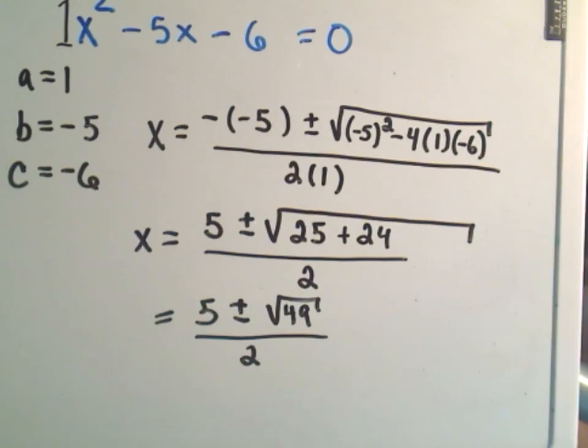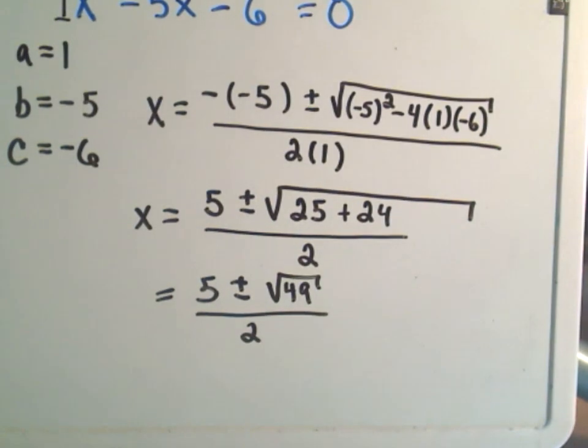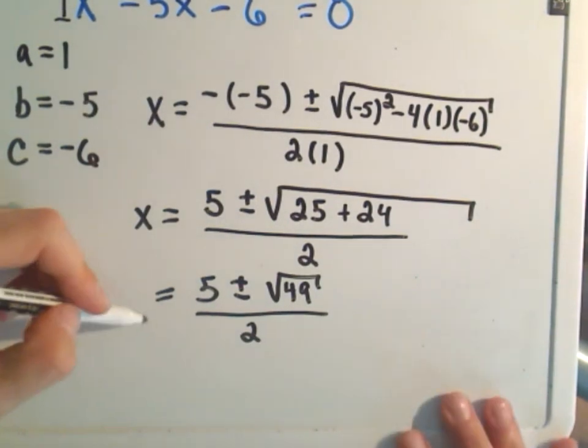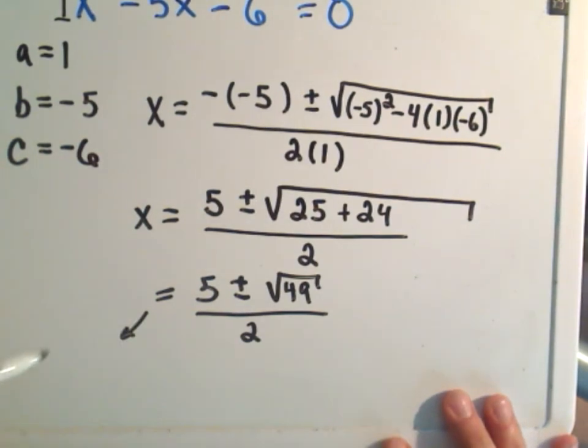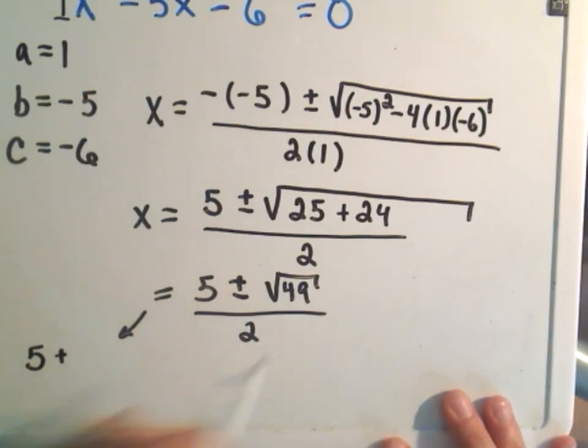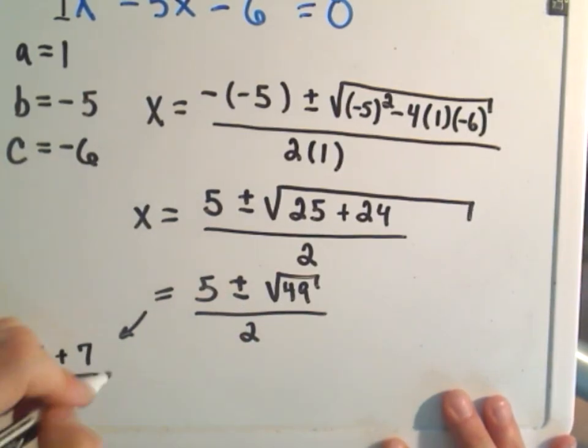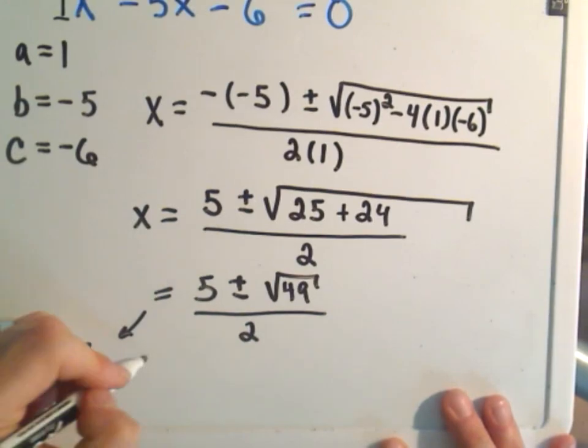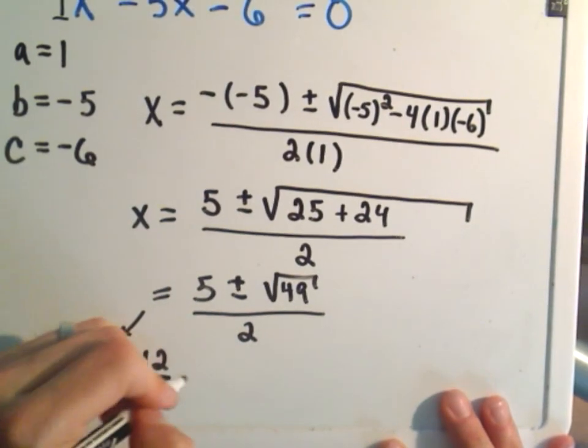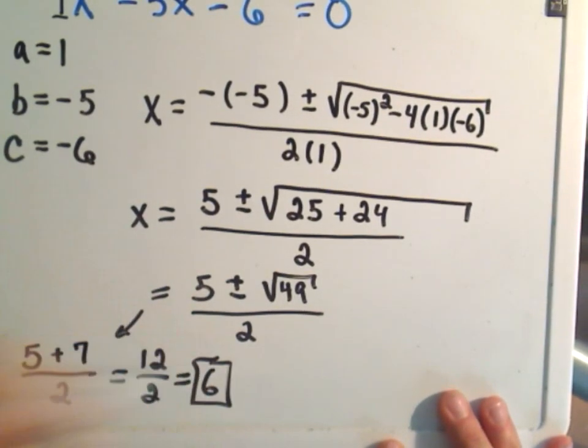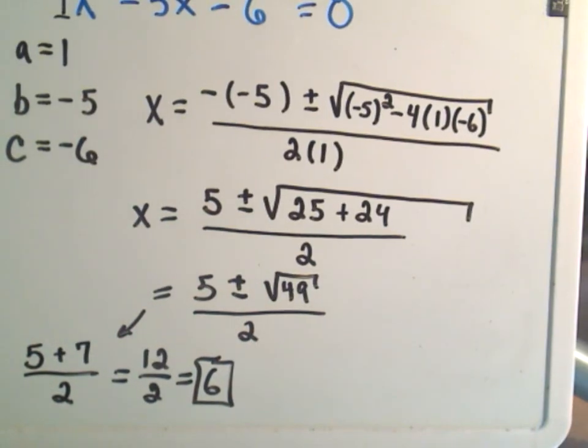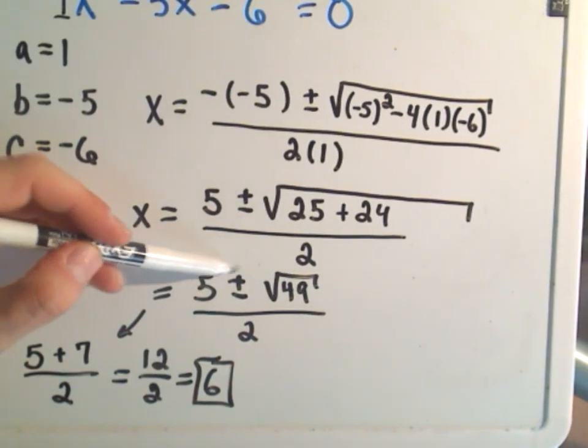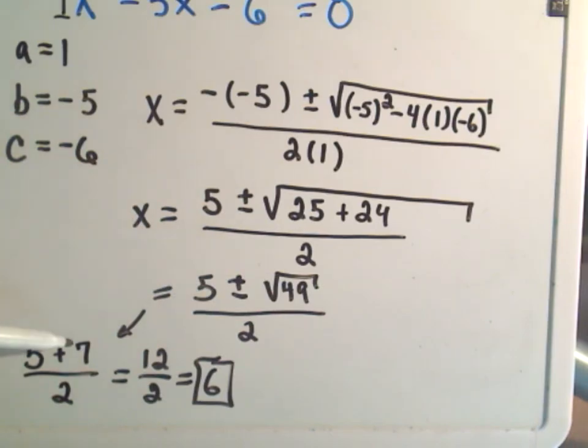At this point, we can take the square root of 49. We're going to get two different equations to solve. We have 5 plus the square root of 49, which is 7, over 2. 5 + 7 is 12 over 2, so one of our solutions is 6. I took 5 plus √49, which is 5 + 7, divided by 2.